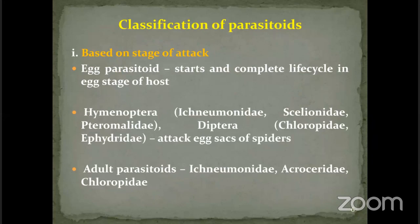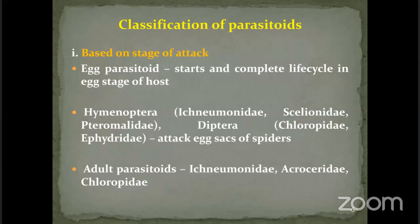Classification of parasitoids is based on the stage being attacked. An egg parasitoid starts and completes its life cycle in the egg stage itself. Under Hymenoptera, the families known to attack spiders include Ichneumonidae, Scelionidae, and Pteromalidae. In Diptera, Chloropidae and Ephydridae are known to attack spiders, and there is another family in Diptera as well.